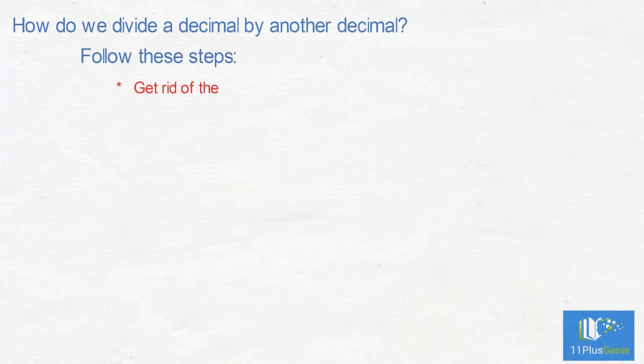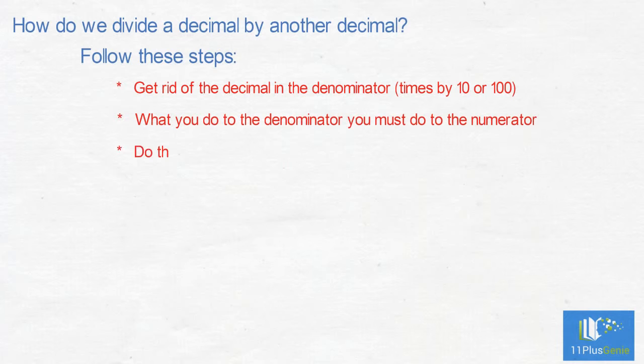How do we divide a decimal by another decimal? Follow these steps. Get rid of the decimal in the denominator (times by 10 or 100). What you do to the denominator, you must do to the numerator. Do the division using the bus stop method.